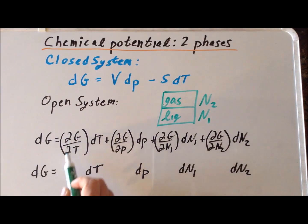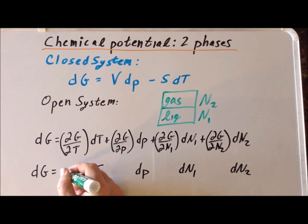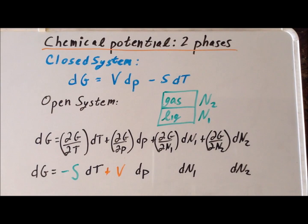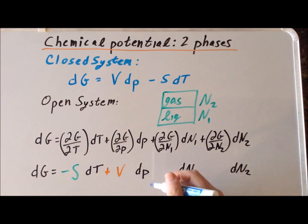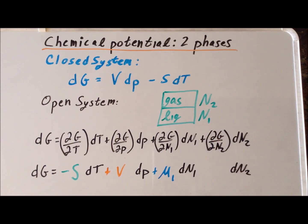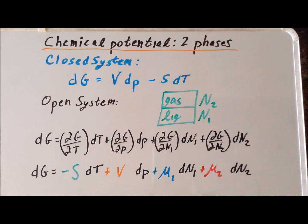We recall that the partial derivative of G with respect to T is minus the entropy, so that is −S. We also know that the partial derivative of the Gibbs energy with respect to pressure is simply the volume, so we have +V. The partial derivative of G with respect to n1 is the chemical potential for the first substance, μ1, and the partial derivative of the Gibbs energy with respect to n2 is the chemical potential for the second substance, μ2, the substance in the gas phase. So now we have a more complete expression for dG for an open system with exactly two phases.